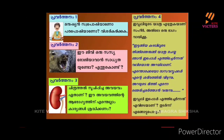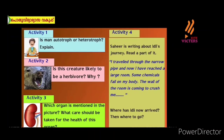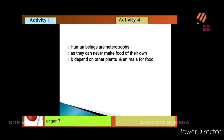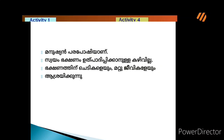We have to look at the human being. What a human being is — a human being is a heterotroph. Human beings depend on other organisms for their food. They depend upon plants and animals. Man is always a heterotroph and never an autotroph.